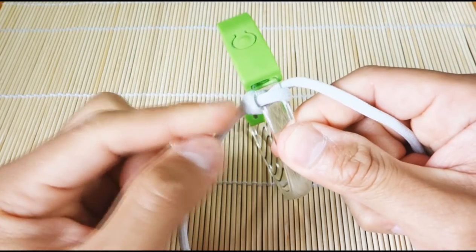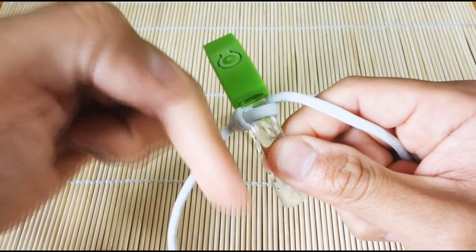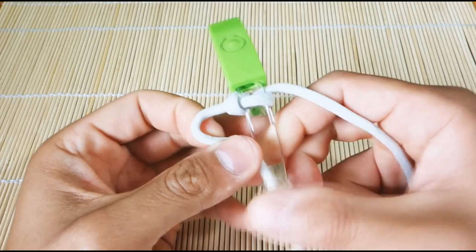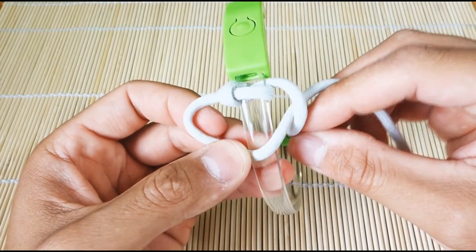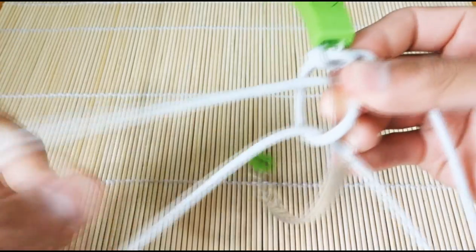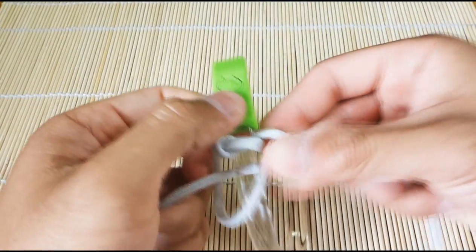And then again, whichever side has this loop facing up and down, you want to take that side, put it over. And you can do the same thing, just mirrored, put it behind and tuck.